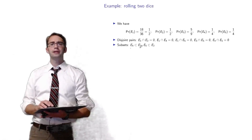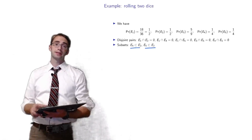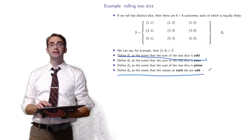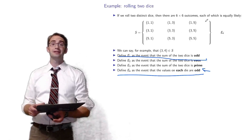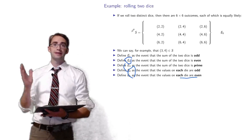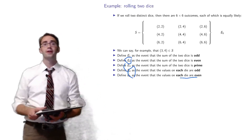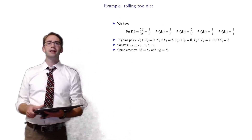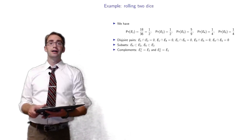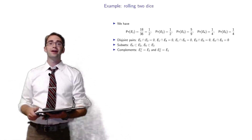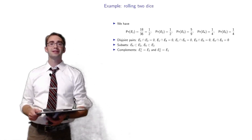E4 is a subset of E2 and E5 is a subset of E2. If E4 or E5 happens — either each entry is odd or each entry is even — that implies the sum is even, so both are subsets of E2. For complements, E1 complement equals E2 and E2 complement equals E1, because either you roll an even or odd sum on the two dice.